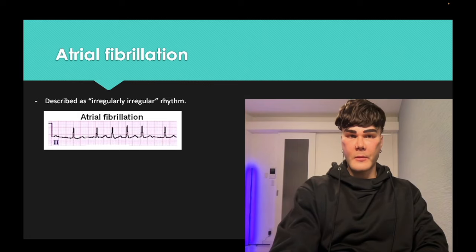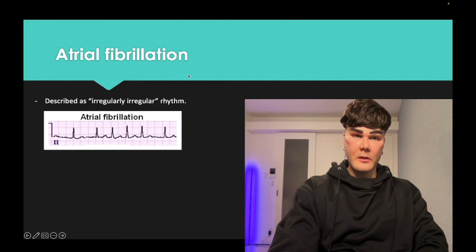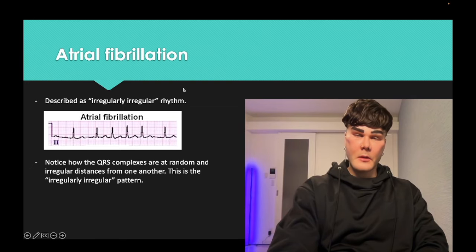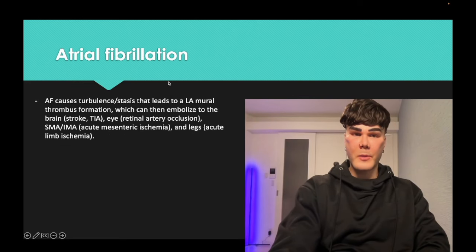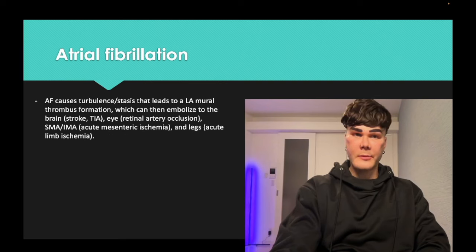Atrial fibrillation — classically irregularly irregular rhythm. When you look at the QRSs, they appear to be random distances apart, and you also don't see any P waves. So the two things you're going to see are this random distancing, irregular rhythm for the QRSs, and no P waves.